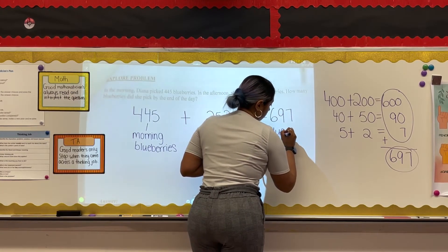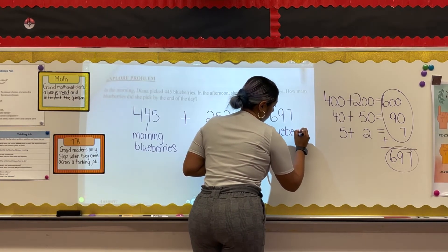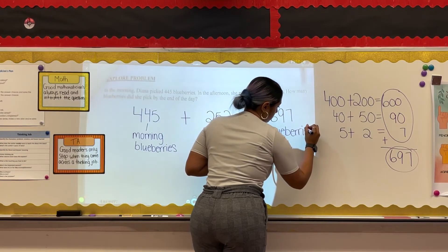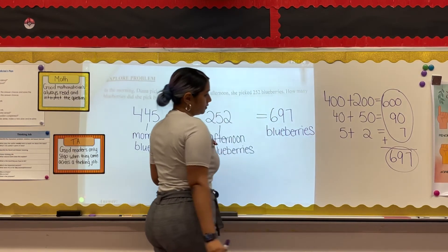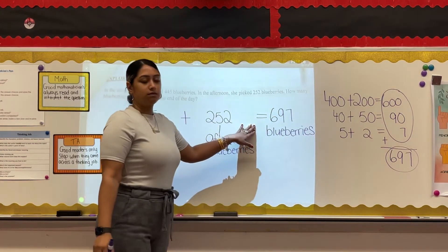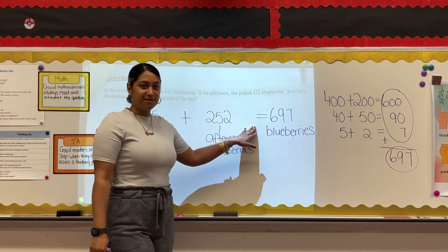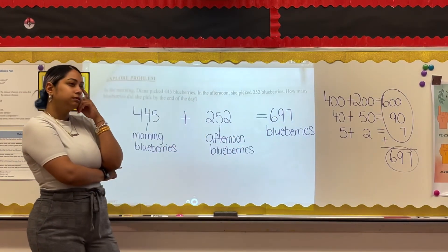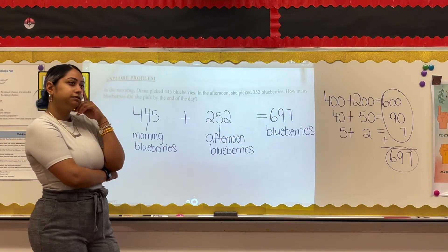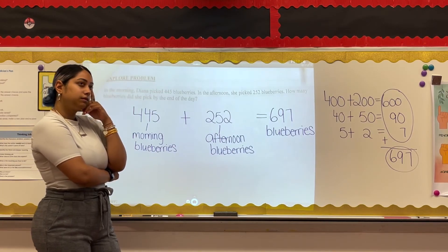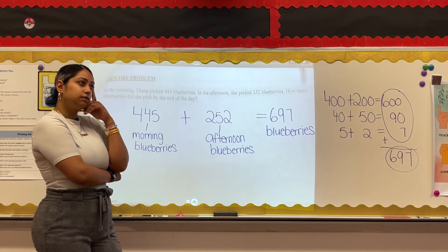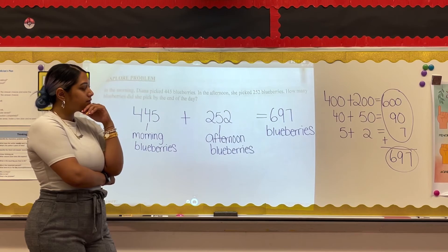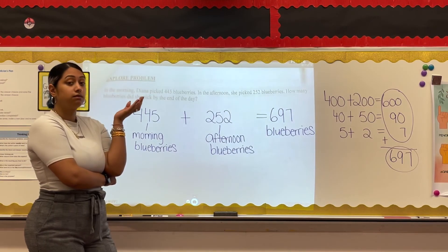The last thing I need to do is ask myself: does my answer make sense? I need to ask — is 697 greater than or equal to 445 and 252? I know it is, so my answer is reasonable.